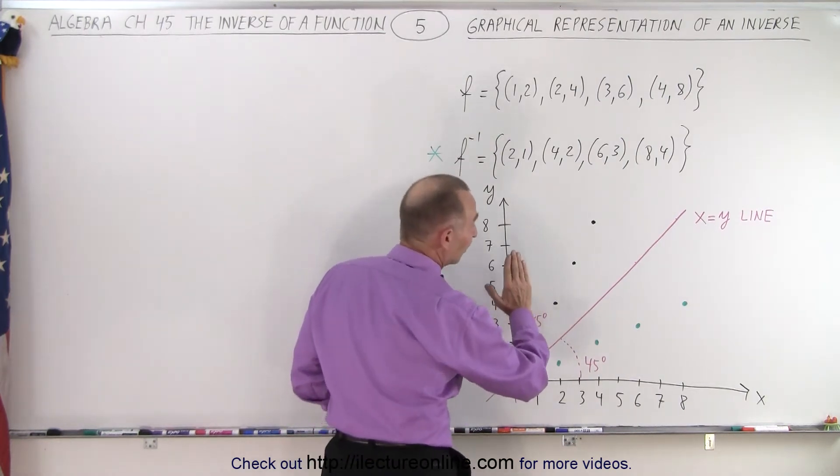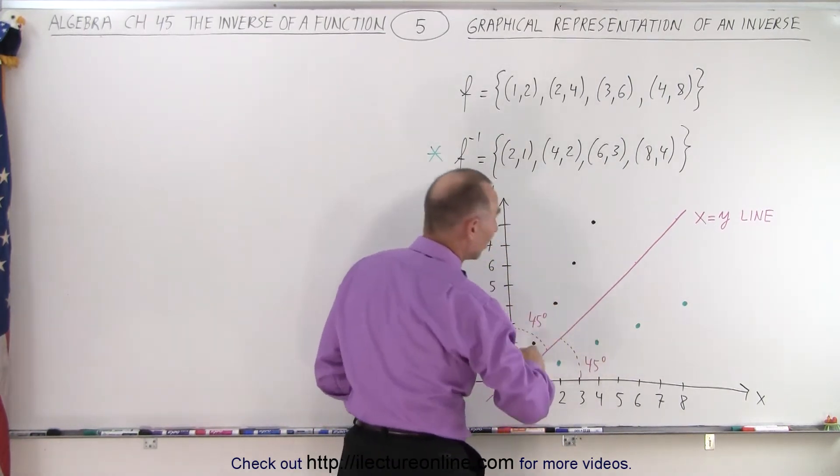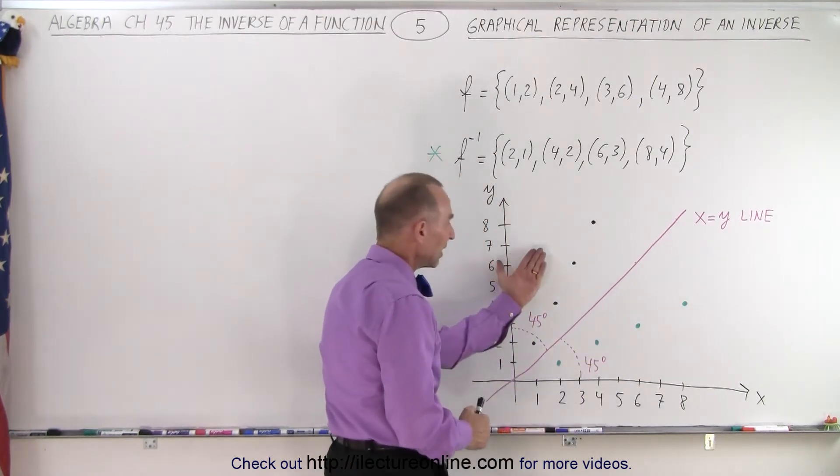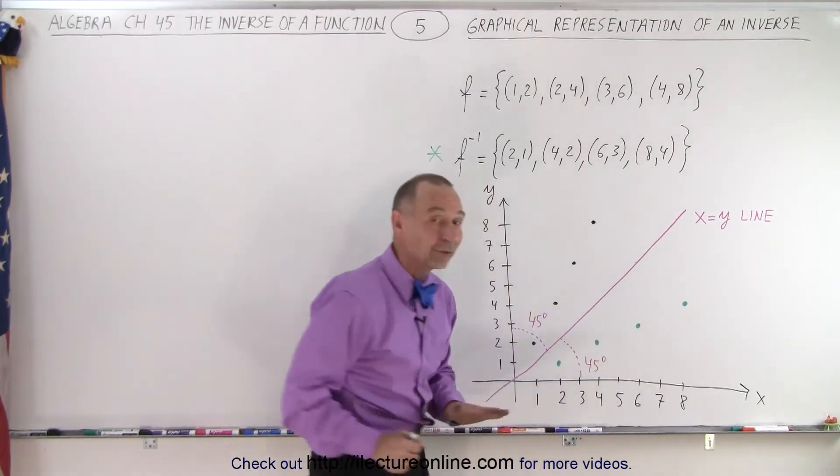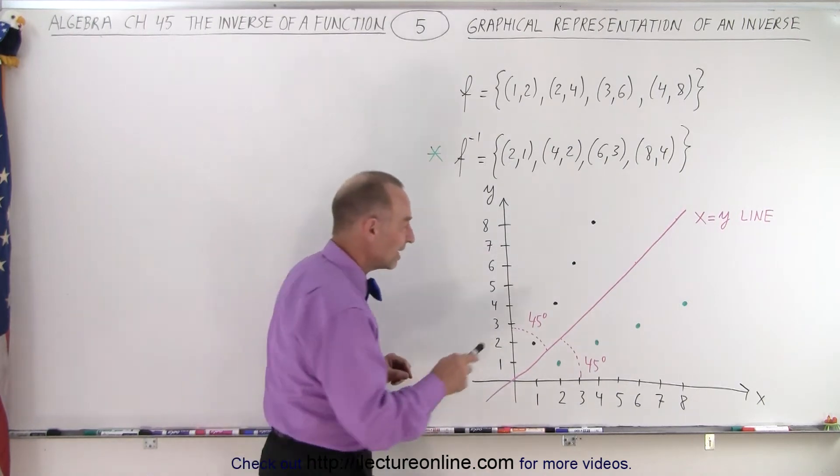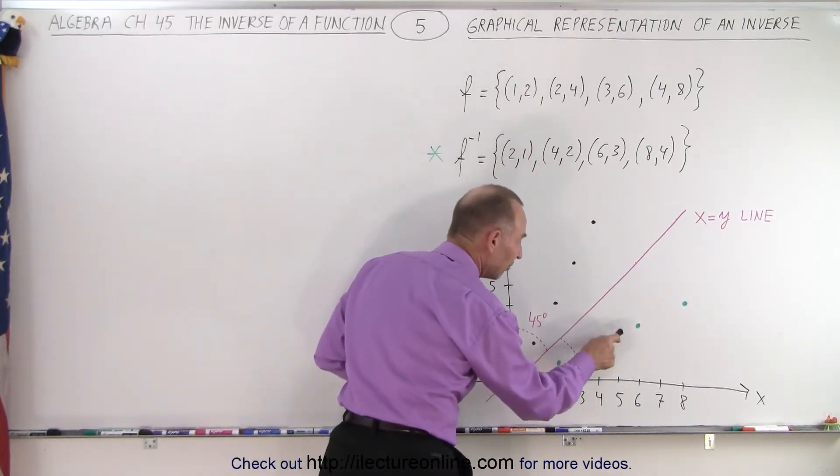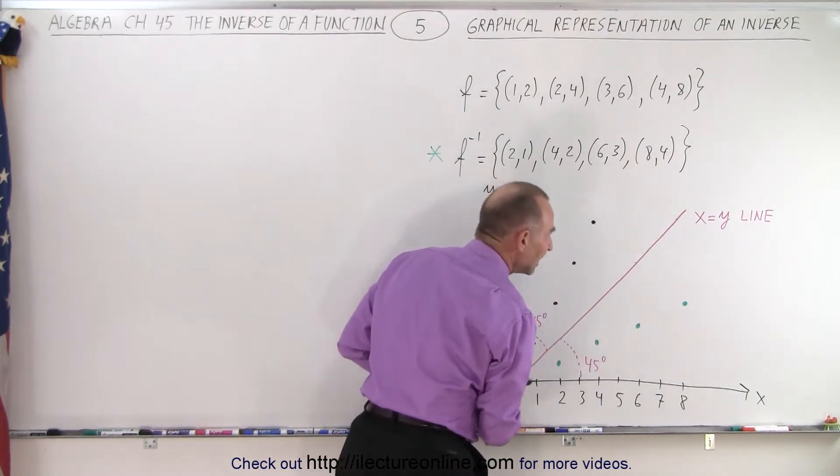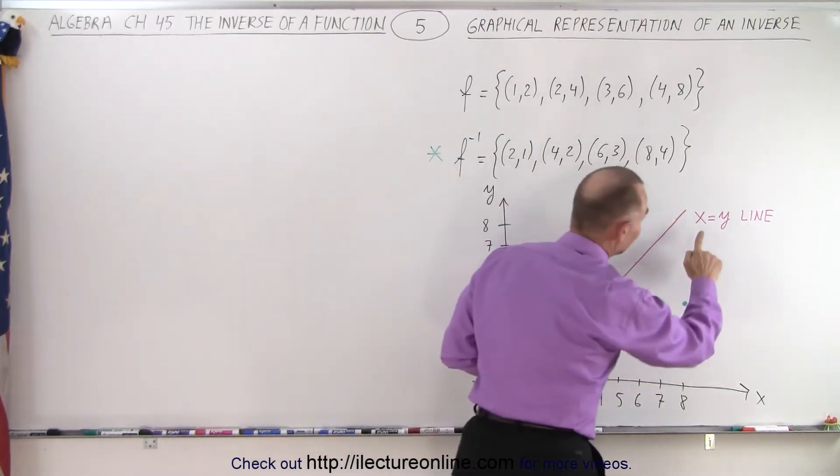In other words, if we took these dots and simply flopped them over on this side, we get an exact mirror image. These dots are exactly what it would be if we took this and flipped it over this way. It's a mirror image. The inverse of a function is the mirror image of the function about the y equals x or x equals y line, I suppose.